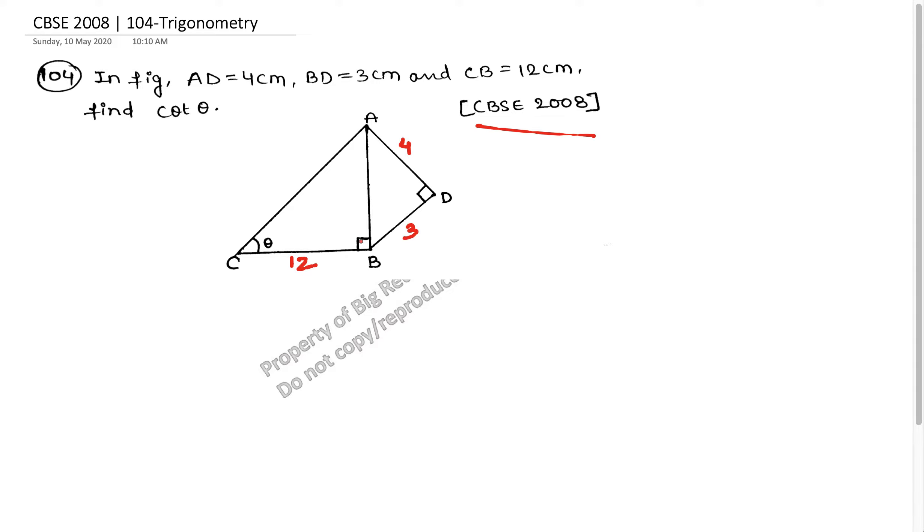Now if you look at the figure, this is a right angle. Angle ABC is a right angle and also angle ADB is a right angle. So if you have to find cot theta, I know that cot theta is equal to base upon perpendicular, which equals BC upon AB.